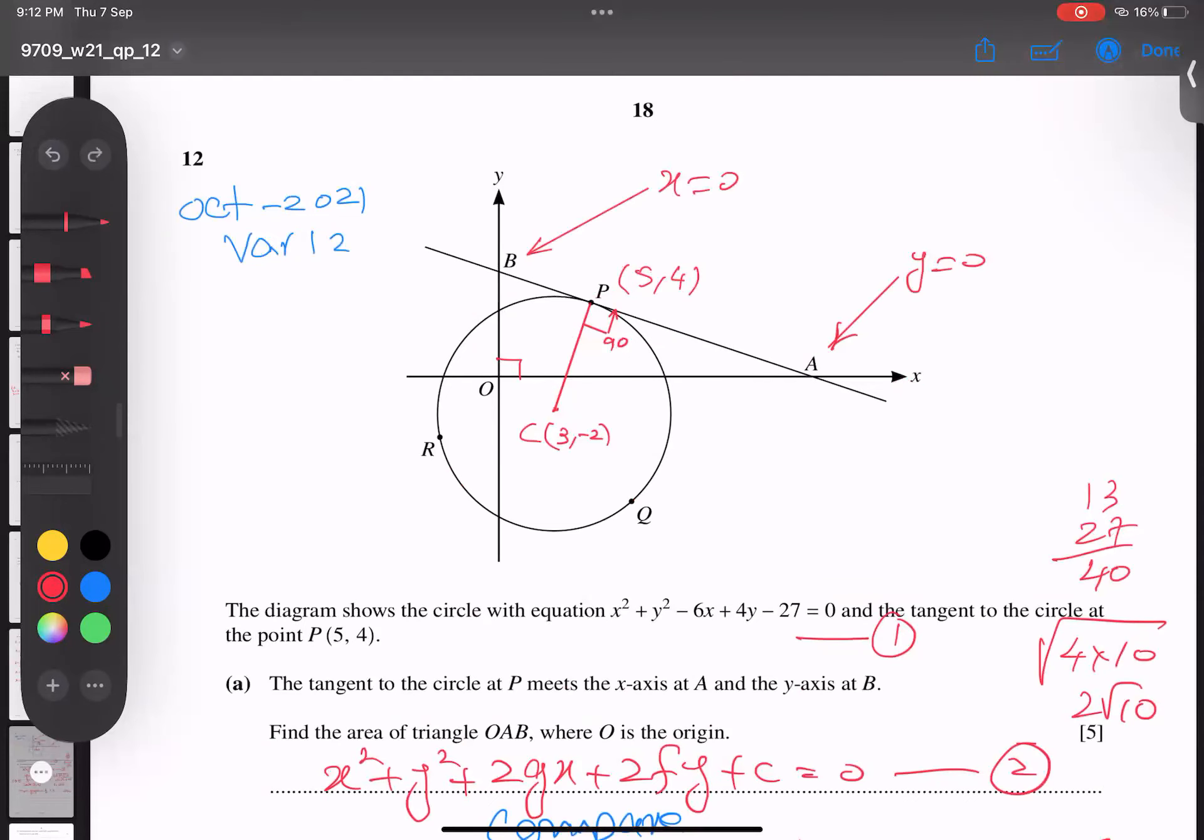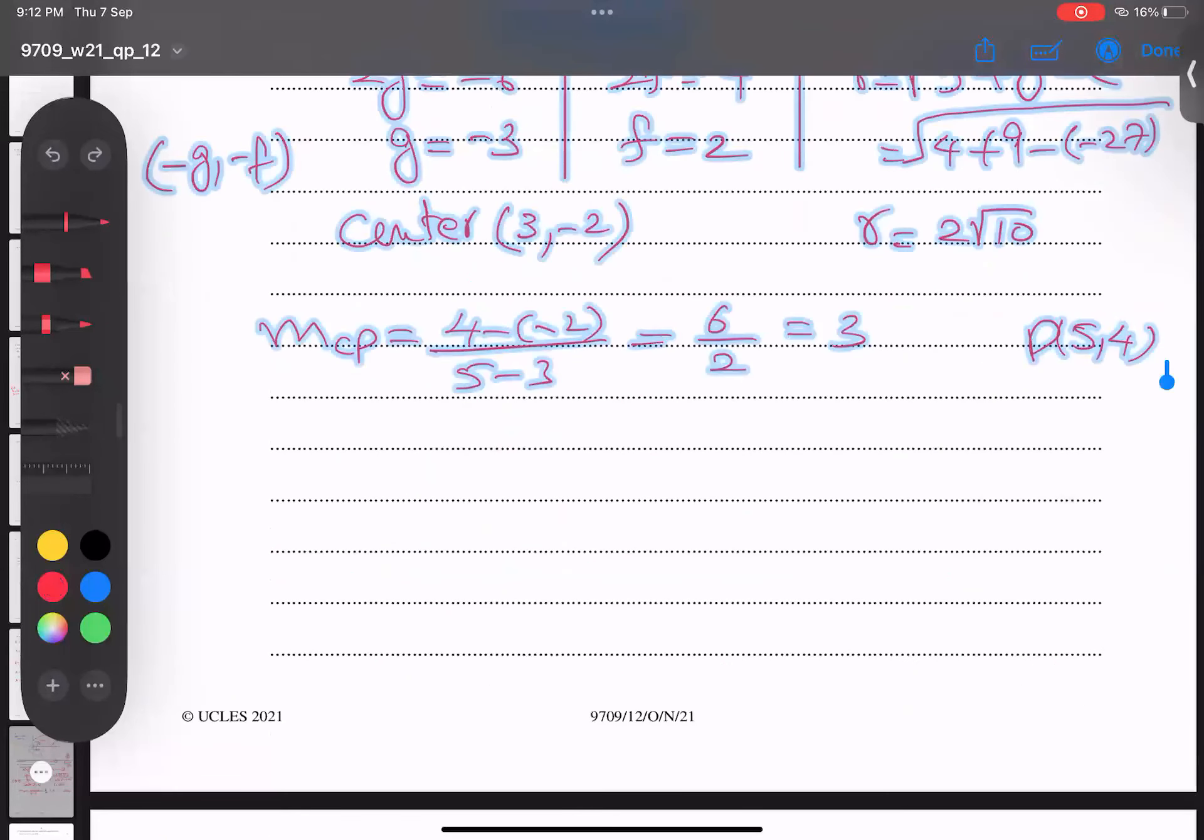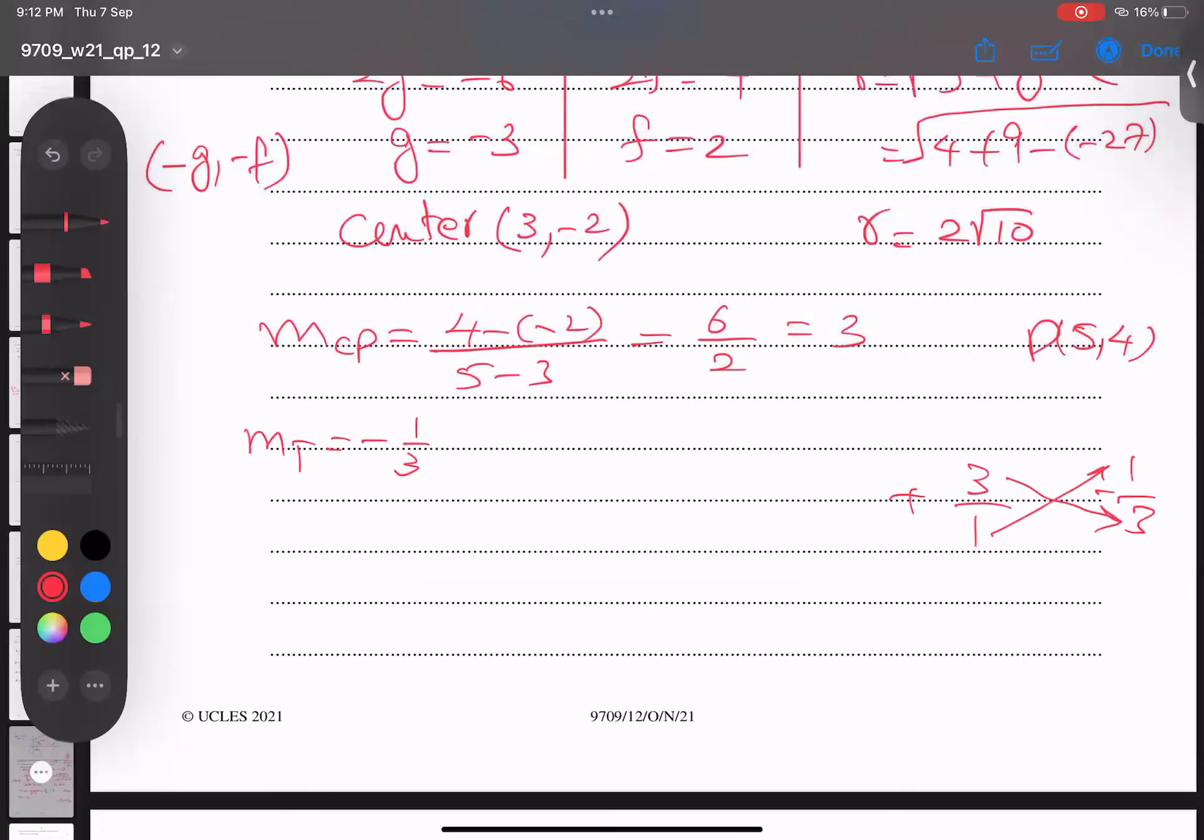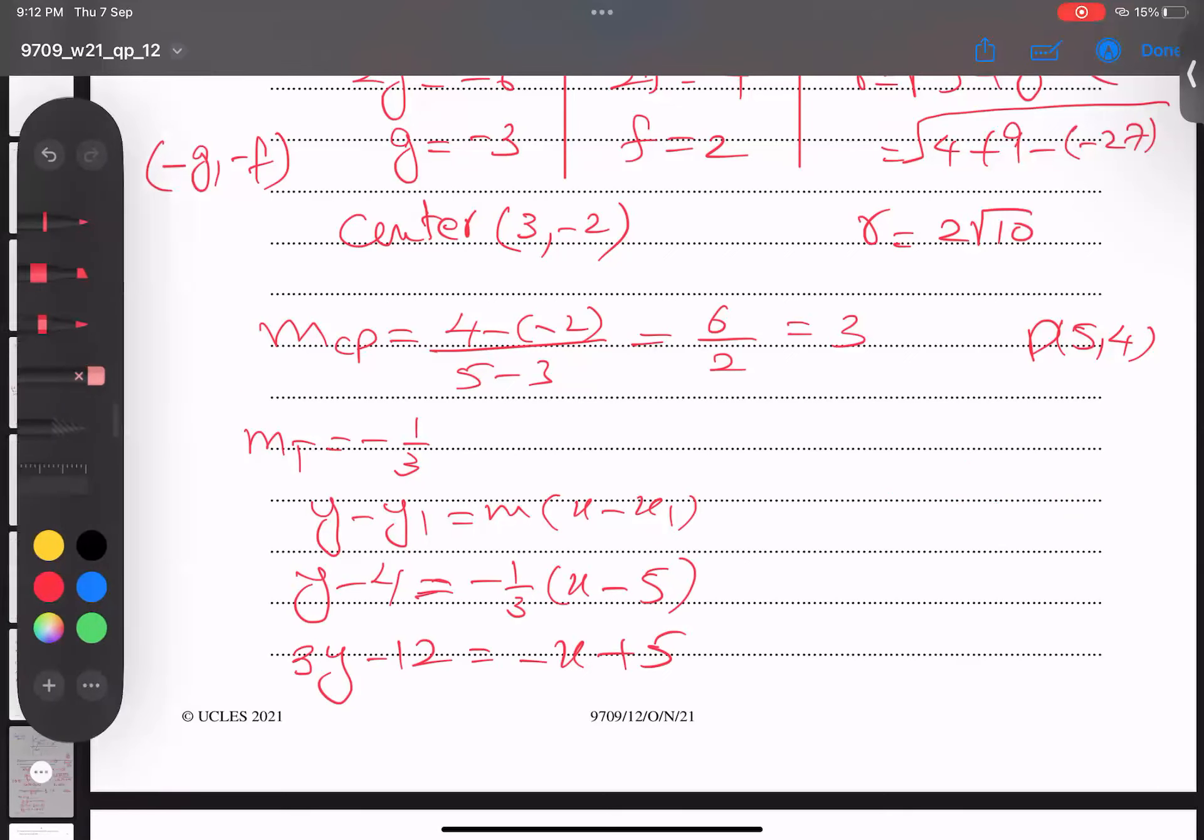and this becomes negative reciprocal. So we are finding now, because I got a gradient of 3 for this line, I'm looking for the tangent. I said before, negative reciprocal. For example, this is 3/1, so if 1 goes up, 3 comes down, and here plus becomes minus. So gradient of the tangent becomes negative 1/3. I must use P coordinate. Formula all of you are familiar with, y - y₁ = m(x - x₁). Y₁ is 4, m is -1/3, and x₁ is 5. Then 3 will multiply there: 3y - 12 = -x + 5. Alhamdulillahi Rabbil Alameen, I got the equation of tangent very easily.